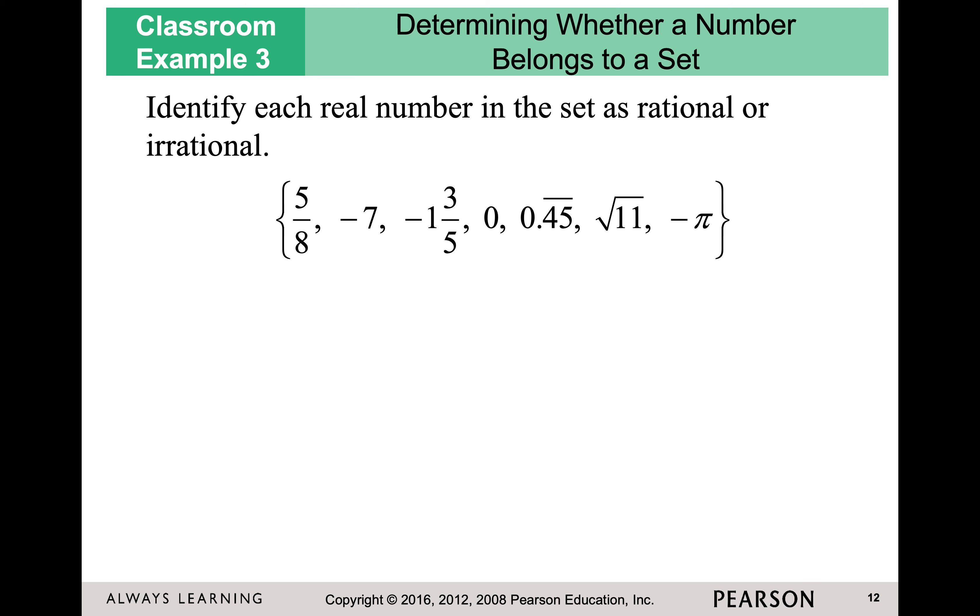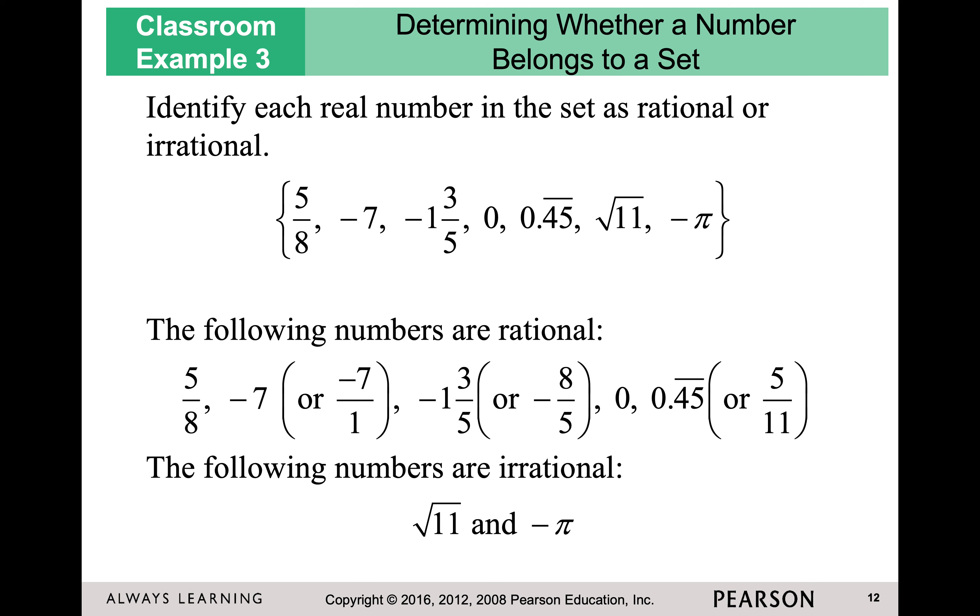Now we're going to work on classifying these as rational or irrational. Here is the key. Anything that's a fraction is rational. Anything that's a whole number is rational because I can write it over one. So that means five-eighths, fraction. Negative seven is a whole number. We're good. Repeating decimals can be written as fractions. We're good. Now the square root of 11, you're going to have to take in the calculator to figure it out. If nothing is repeating, then it's going to be considered irrational. Pi is a non-repeating decimal. It is not rational. It is irrational.